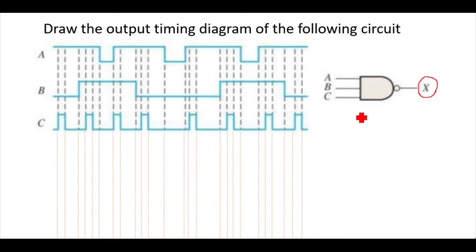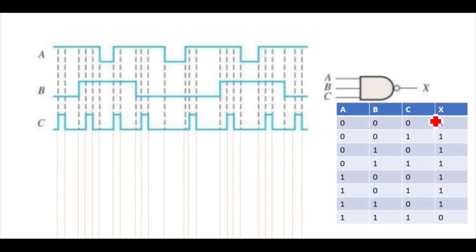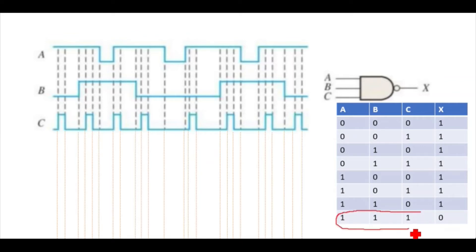You need to draw the output timing diagram for X. It's better to design the truth table first, because normally we get the truth table for a two-input NAND gate. So let's draw the truth table for the three-input NAND gate. Only when all three inputs are one do you get zero output; for all other combinations you get one. So if any one of the inputs is zero, you will get output one.